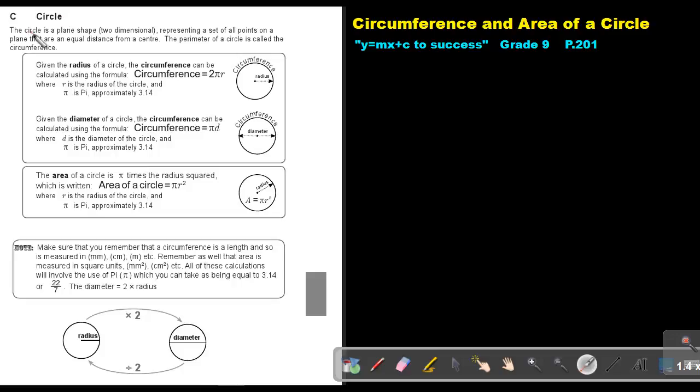A circle is a plane shape, two-dimensional, representing a set of all points on a plane that are an equal distance from a center.